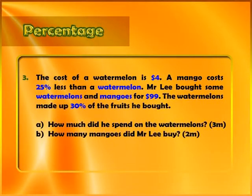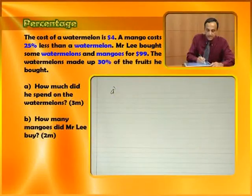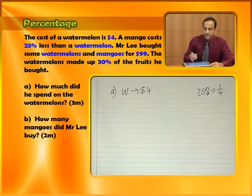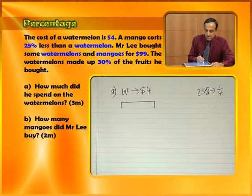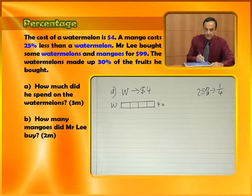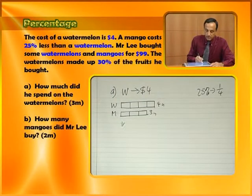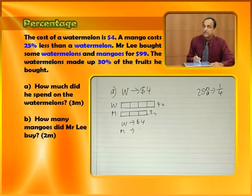We need to find out how much he spent on watermelons. First of all, we need to know that watermelons cost $4 and a mango costs 25% less. 25% is actually one quarter, so if a watermelon is four quarters, that means there are four units for watermelons. Mangoes were 75%, which is three units — so the mangoes were 25% less than the watermelon. If a watermelon is $4, then a mango must be three quarters of that, which is $3.